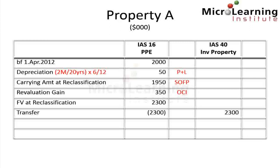The fair value of the investment property will be re-measured at year-end. At the 31st of March 2013 we are told that the fair value has grown to $2.34 million. Thus the investment property has experienced a fair value gain of $40,000. This $40,000 gain is credited to profit and loss, while the fair value of the investment property at $2.34 million appears on the statement of financial position at year-end.